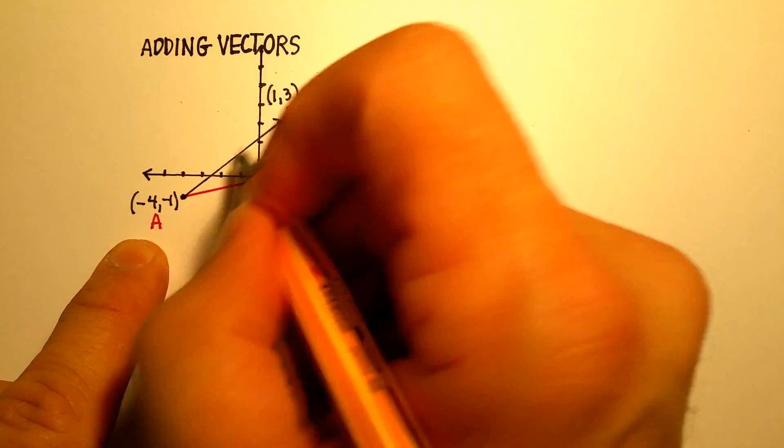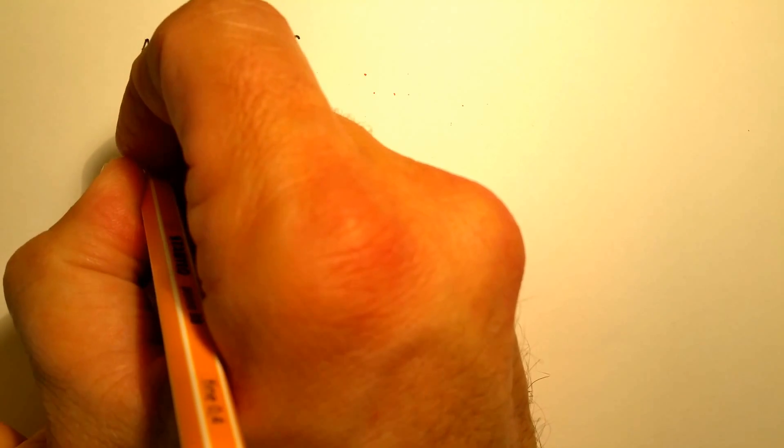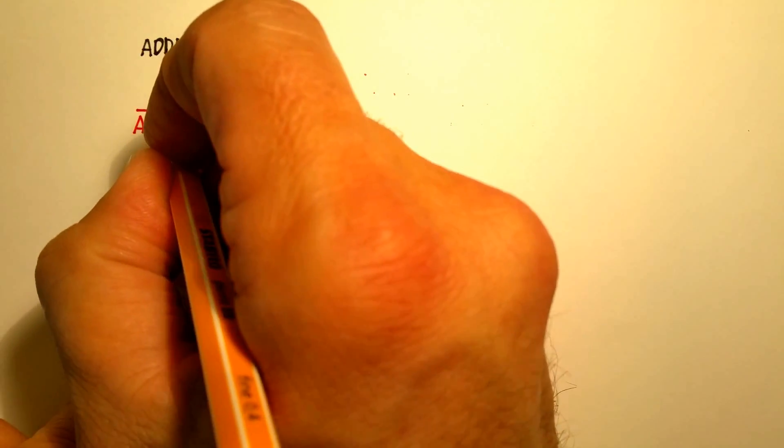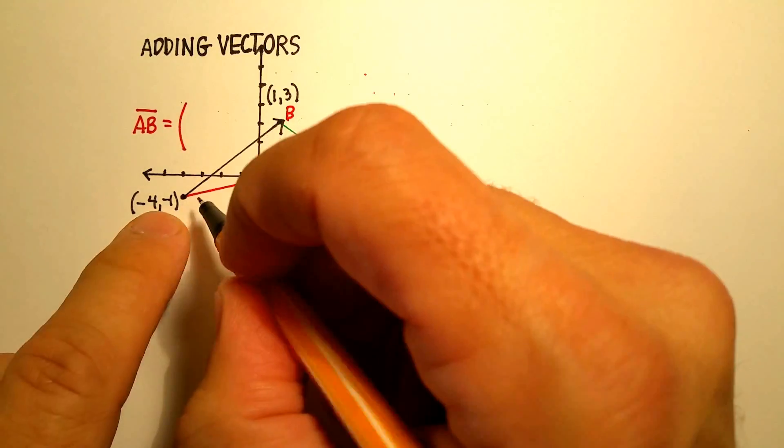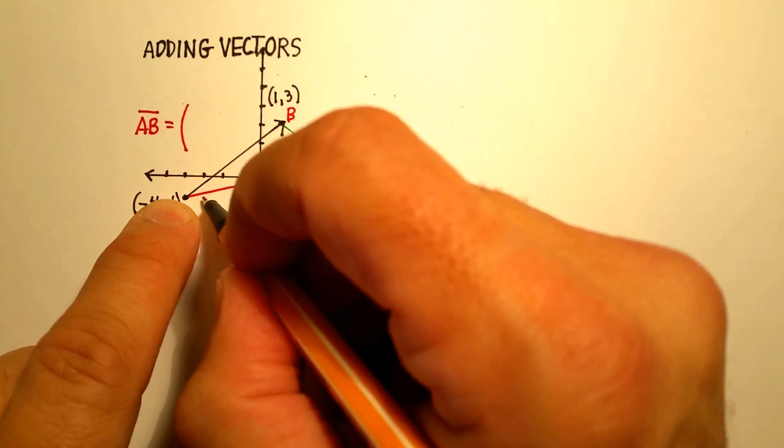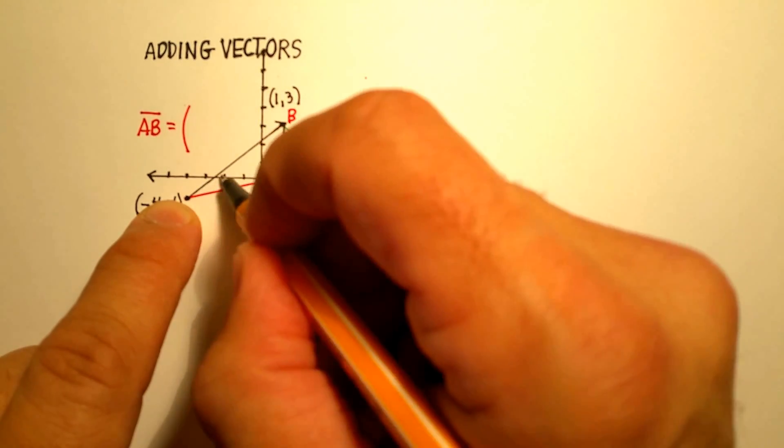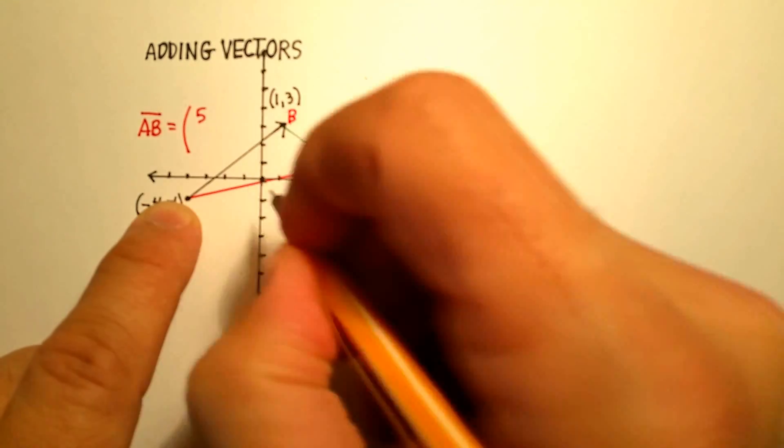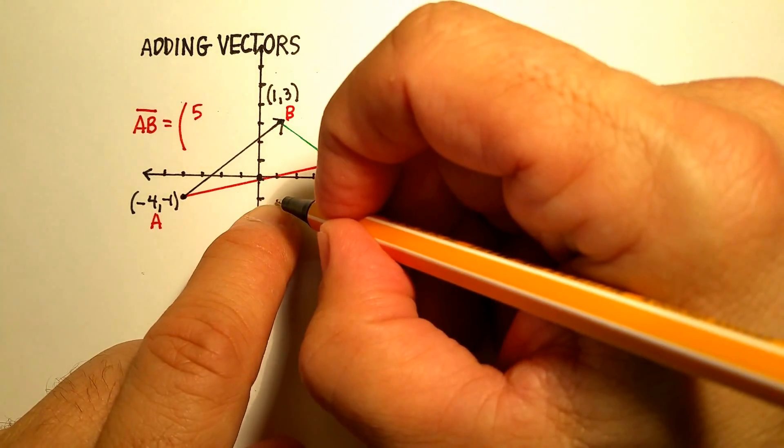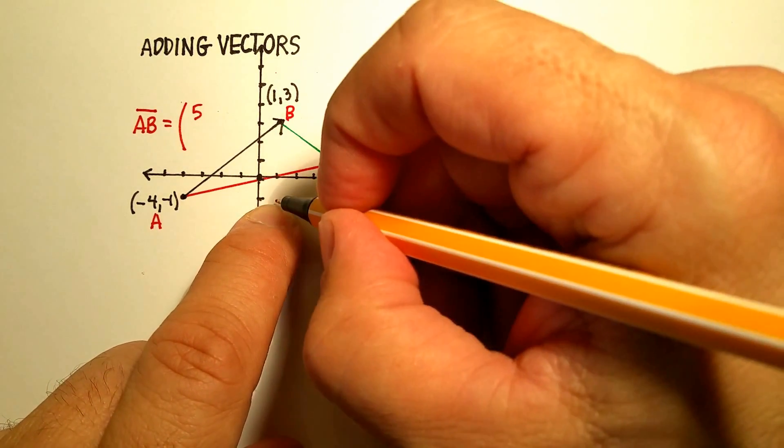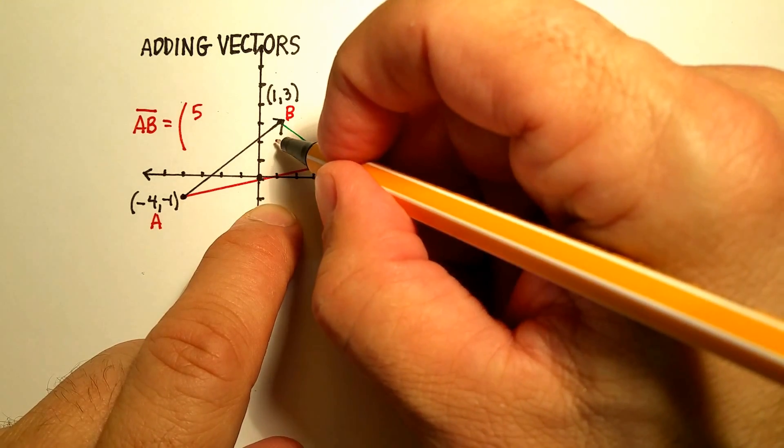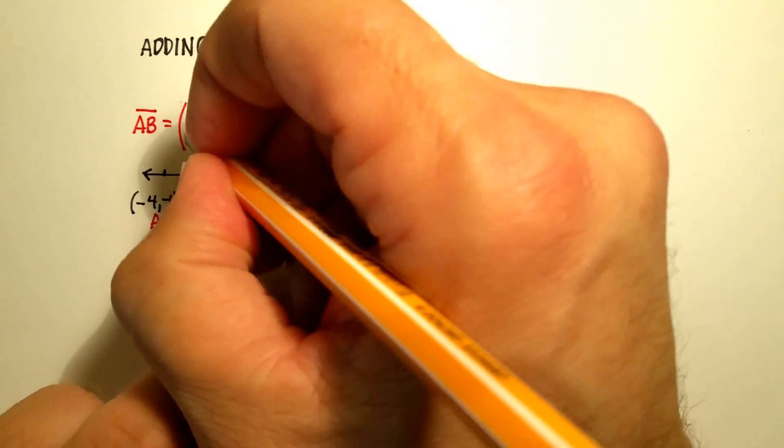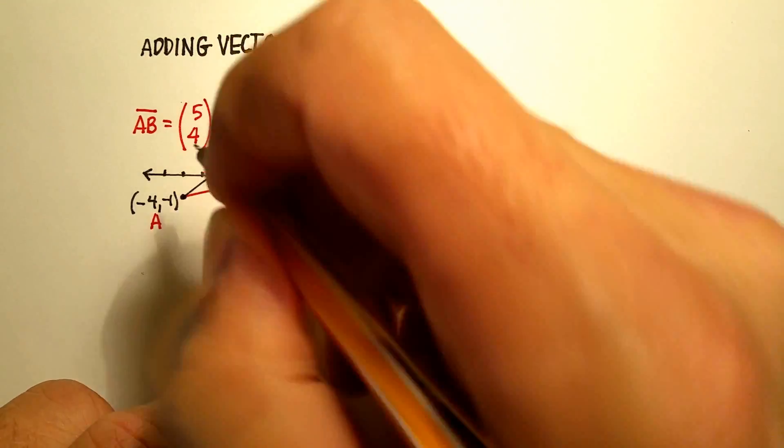You would say that vector A, B would be, let's go 1, 2, 1, 2, 3, 4, 5. All right? So we'll put that up there. And then we'll go, its vertical component would be 1, 2, 3, 4. So again, we'll do it like that.